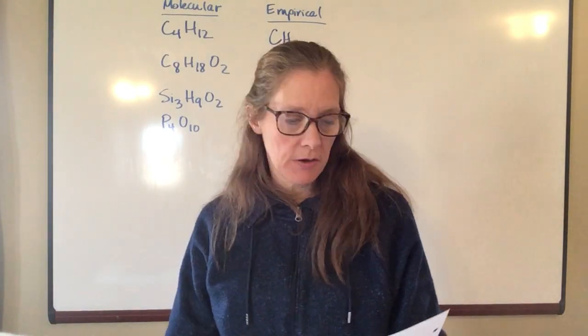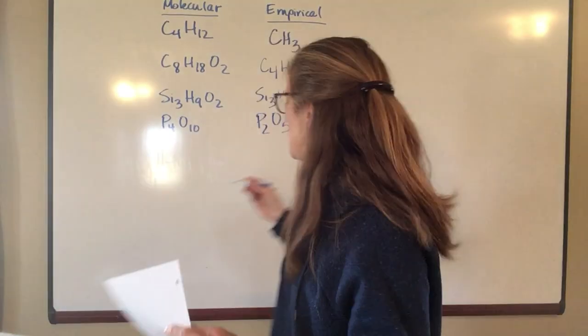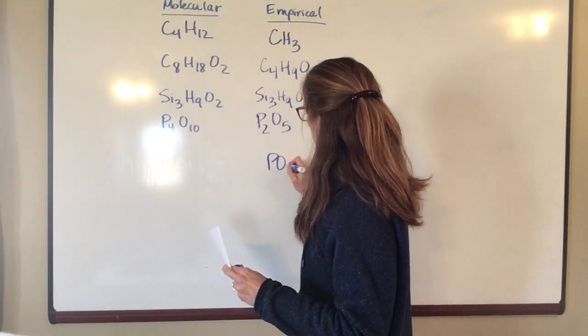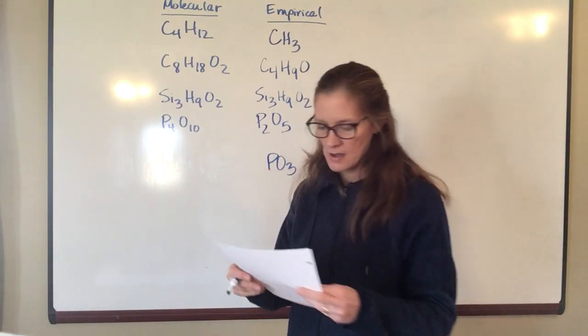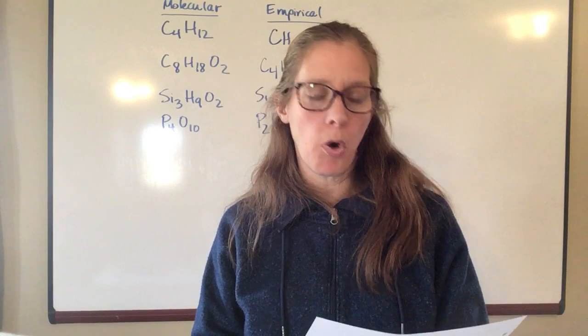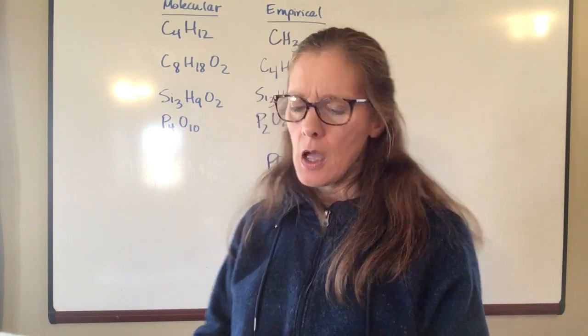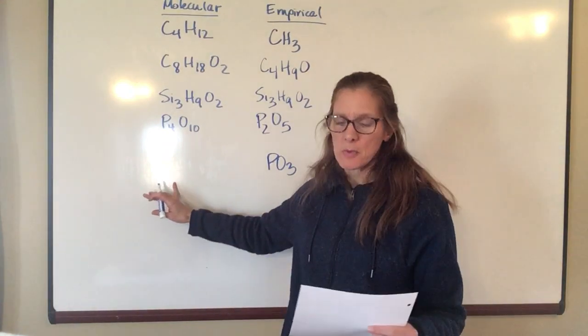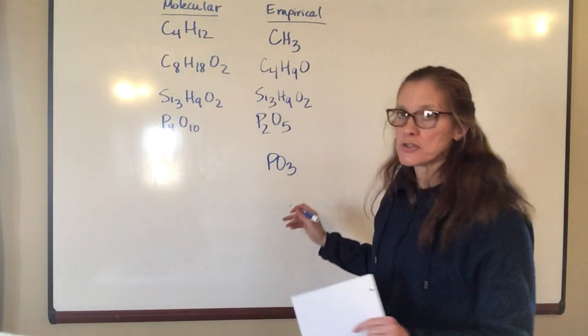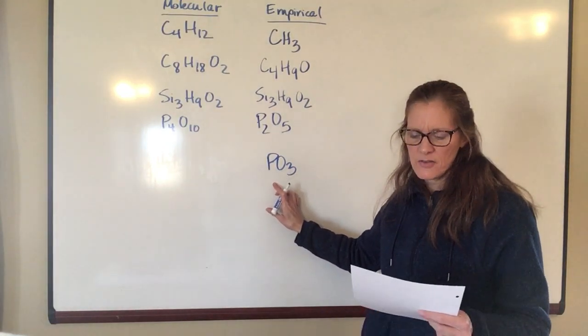You look at the next problem down. It says the empirical formula for a compound is PO3. And so I know that's what the empirical formula is. And the molar mass is 158 grams per mole. What is the molecular formula? Okay well the molar mass of the molecular formula is 158. In order to figure that out, I'm going to have to say well what's the molar mass for this one?